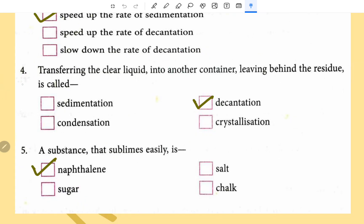Question number 4 of MCQ. Transferring the clear liquid into another container leaving behind the residue is called decantation. A substance that sublimes easily is naphthalene balls.